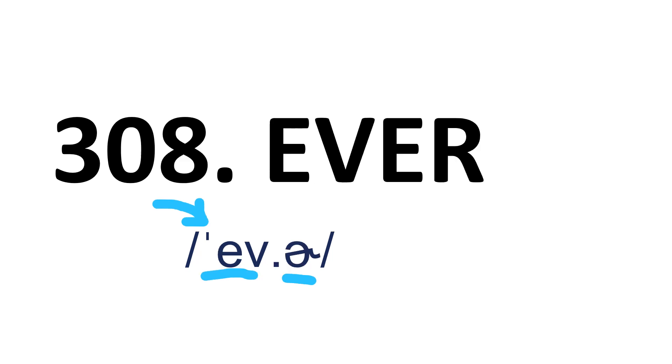Ever — it's a two-syllable word and stress is on the first syllable. Ever. Red — it has only one syllable. Red.